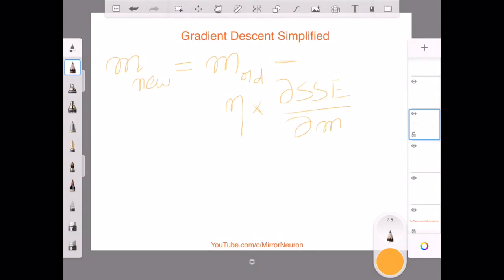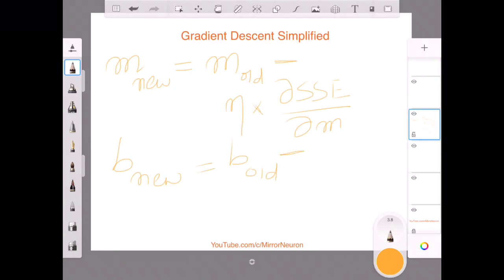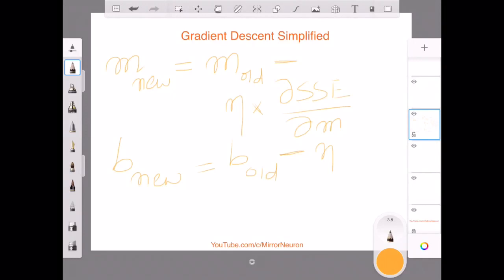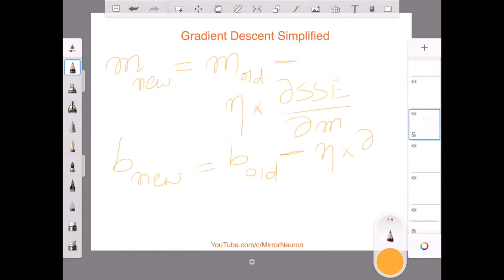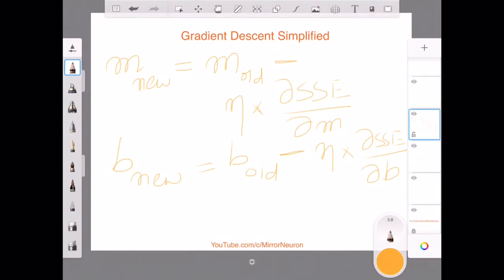Similarly, what is the new value of b? New value of b says that whatever is your old value of b, because the direction says that we have to reduce, that is why we are subtracting and we are subtracting by this amount. Learning rate times, basically the step I want to reduce and sum of squared error, derivative of sum of squared error with respect to b.